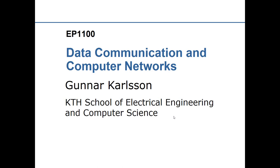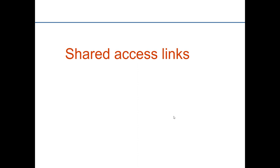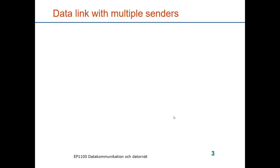This is EP1100 Data Communication and Computer Networks. In this module I will go over shared access links — a link where there are several senders and perhaps several receivers. The complication is not with the multiple receivers but rather with the multiple senders, because with multiple receivers all you need is an address in the frame so each receiver can determine whether a frame is destined for itself. But let's look at what happens when we have multiple senders.